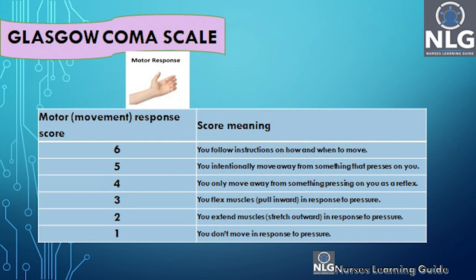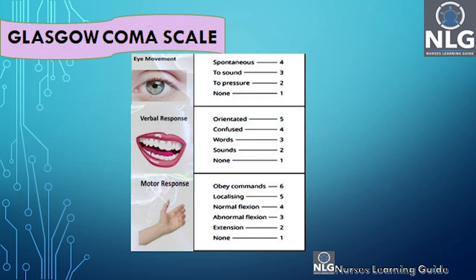You have to see each step and score according to the response. The three components are eye movement, verbal response, and motor response, with highest scores of 4, 5, and 6 respectively. Eye: spontaneous opening is 4, opening to sound is 3, opening to pressure is 2, none is 1. Verbal: oriented is 5, confused is 4, words only is 3, only making sounds is 2, nothing is 1. Motor: obey command is 6, localizing is 5, normal flexion is 4, abnormal flexion is 3, extension is 2, no response is 1.